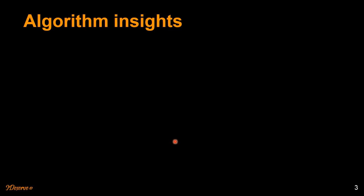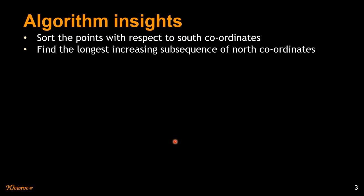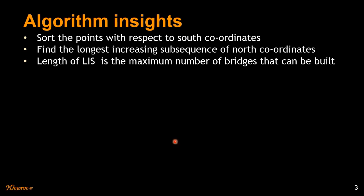Let's see what algorithm we can use to solve this problem. There are three steps. The first step is to sort the points with respect to the southern coordinates — we have points in the form of north-south pairs and we sort those pairs on the basis of southern coordinates. Then we find the longest increasing subsequence of northern coordinates. The length of that longest increasing subsequence is the maximum number of bridges that can be built. I recommend checking out the longest increasing subsequence video linked above before continuing.